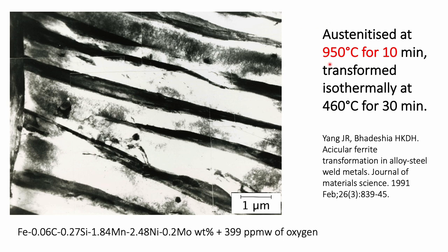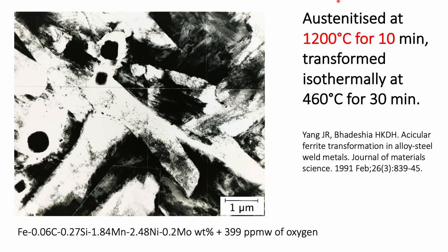Here you see a weld metal which has been austenitized at 950 degrees centigrade for just 10 minutes so that there is a small austenite grain size, and you can see that the plates forming from the austenite grain boundary are essentially parallel and in the same crystallographic orientation — this is in spite of the non-metallic inclusions present. If I take the same material and austenitize it at a higher temperature to generate a bigger grain size, then there is an opportunity to nucleate plates on the non-metallic inclusions and therefore we recover an acicular ferrite microstructure. Remember that nucleation on inclusions is always less effective than nucleation on the austenite grain boundaries, and therefore you should aim for a large austenite grain size in order to generate the acicular ferrite microstructure.